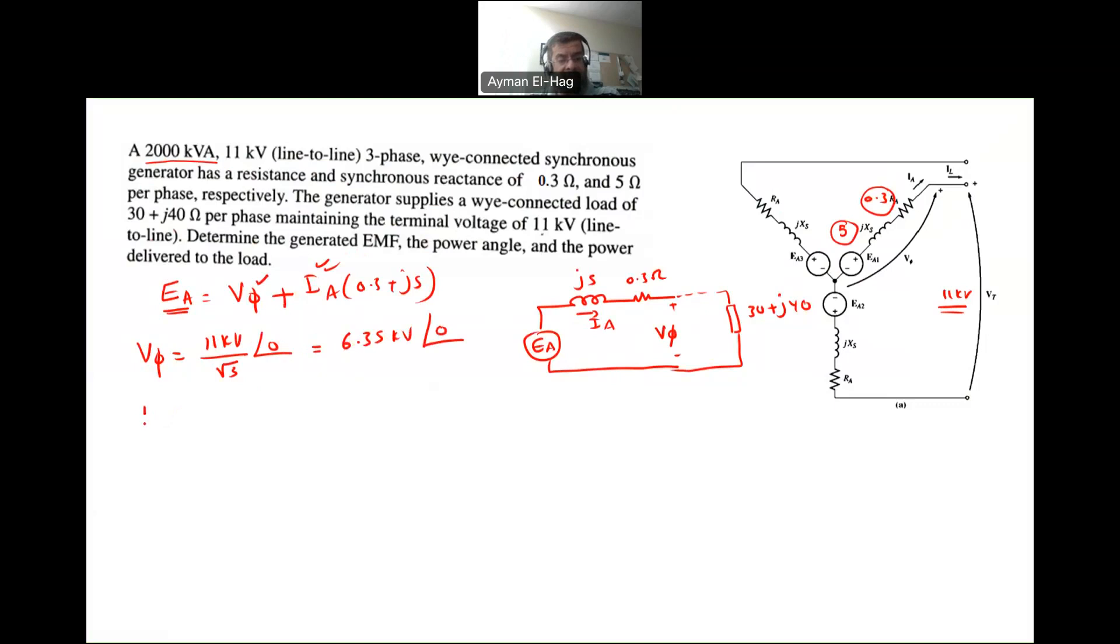Now, I want to find IA. How to find IA? IA, I know the load impedance. I know the voltage across the load impedance, so we can find IA. So basically, it's the phase voltage, the 11 kilovolt, divided by root 3, angle of 0, divided by the impedance, which is 30 plus J40. Now, this is kilovolt, so this is 11,000. So this will give me a current equal to 127 amps, angle of minus 53.13 amps. So I know IA, I know V phase,